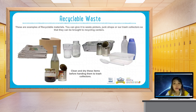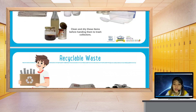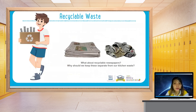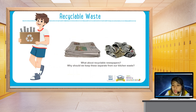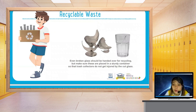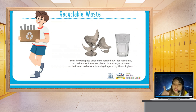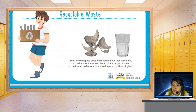You can give away recyclable materials, but before you hand them to trash collectors, you should clean and dry these items first. Recyclable newspapers should be kept separate from kitchen waste. Even broken glass should be handed over for recycling, but make sure it is placed in a sturdy container so that garbage collectors are not injured by the broken glass.